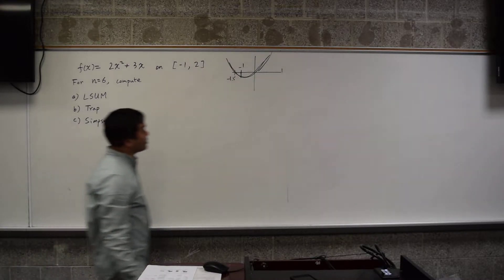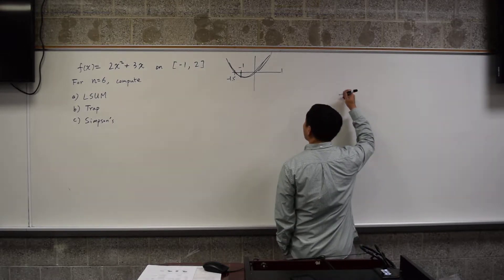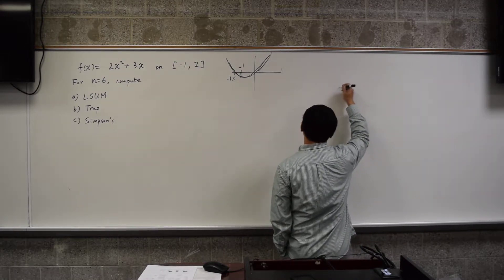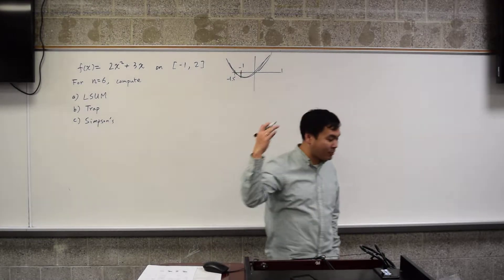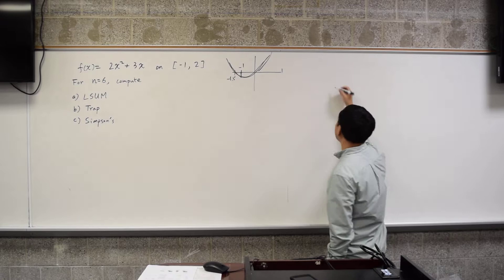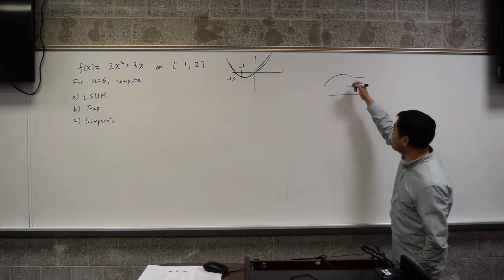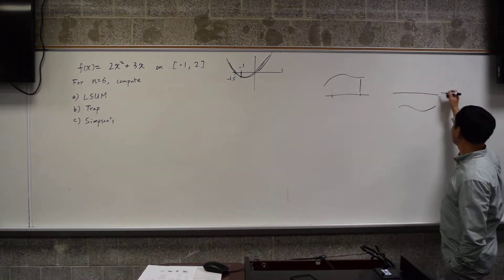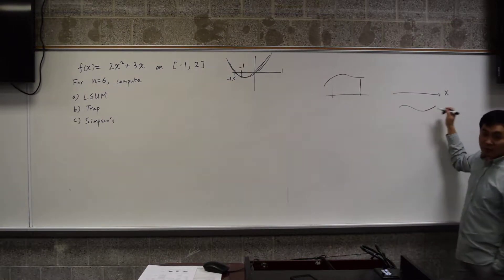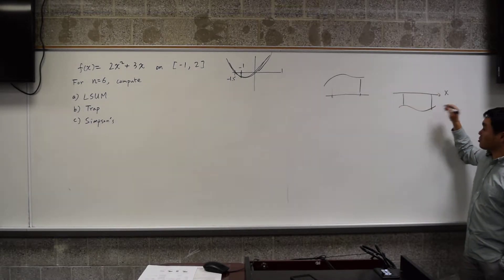Now, there's something that I didn't really elaborate. What we are trying to do when we do left sum, trapezoid, and Simpson, I simply said it's the area under the graph, right? But that's only true when it's above the x-axis. What happens if it's below the x-axis? Here's the x-axis and your graph is this. What do those approximations try to approximate?